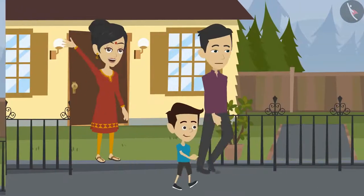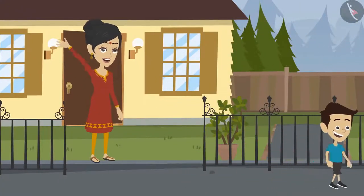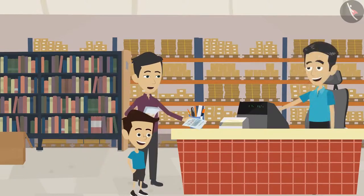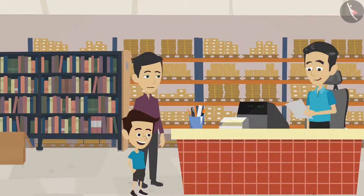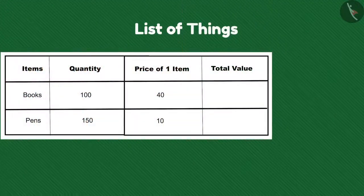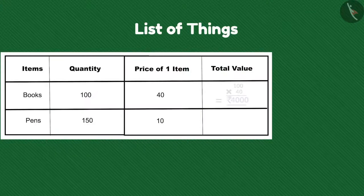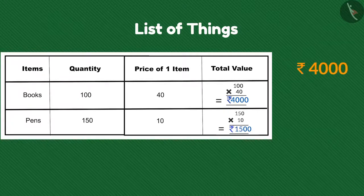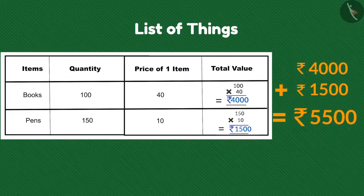How are you, Mohan? I want these things to open my shop — tell me the cost of these things. Brother Ramu, one book costs rupees 40 and one pen costs rupees 10. Look Sham, the shopkeeper told us the cost of one item — now can you tell me the total cost? The cost of books is 40 into 100, that is 4000 rupees. The cost of pens is 10 into 150, that is 1500 rupees. The total cost is 4000 plus 1500, that is 5500 rupees.